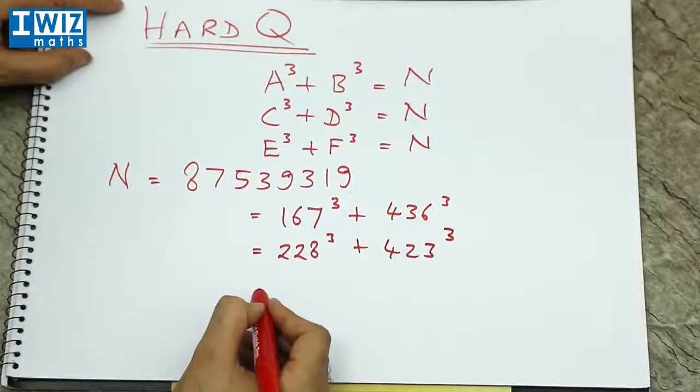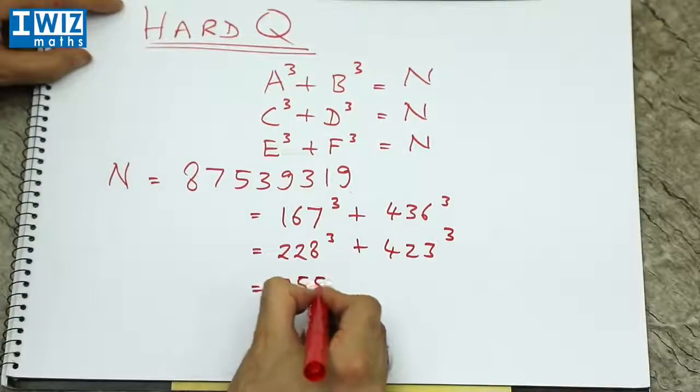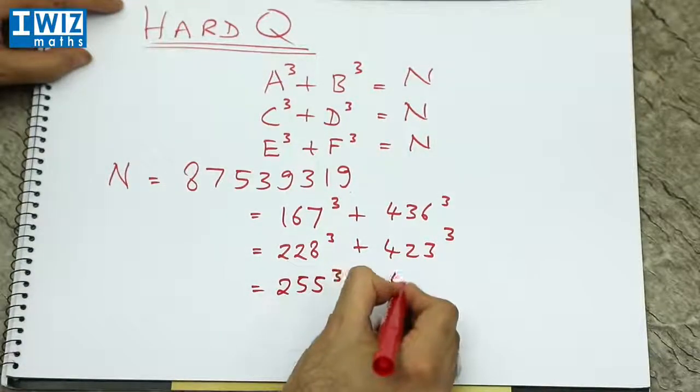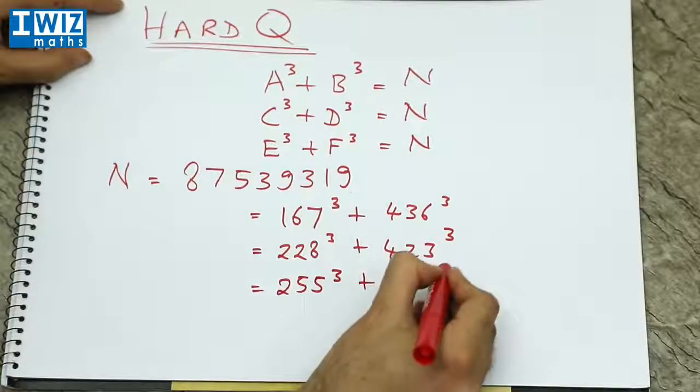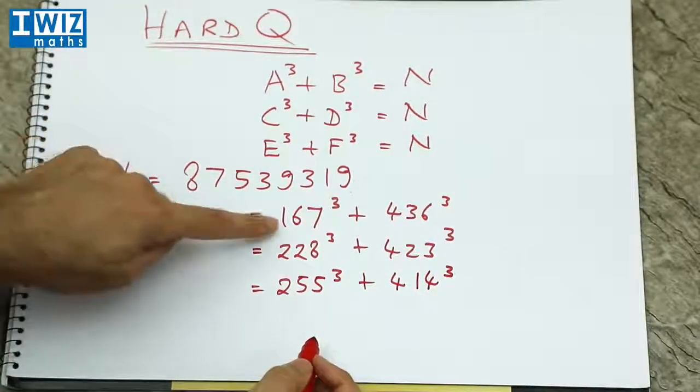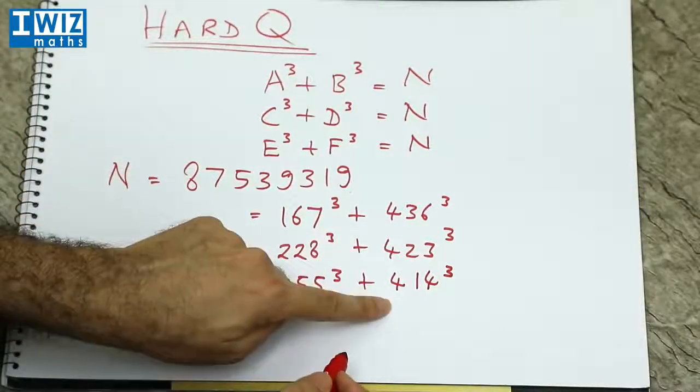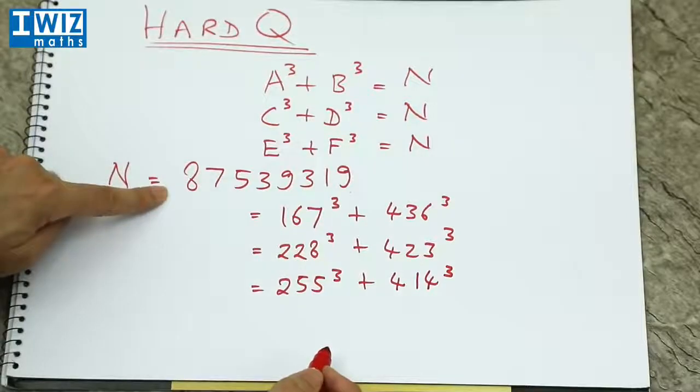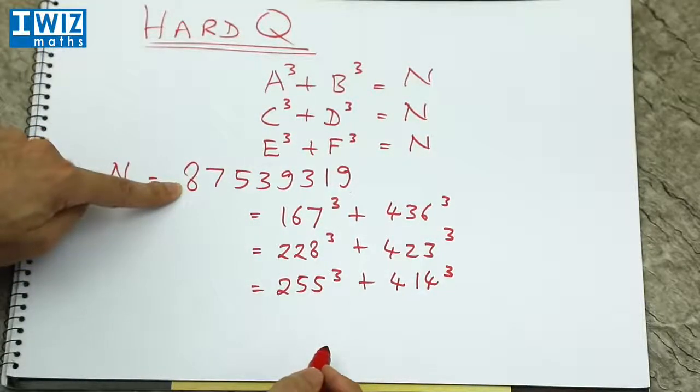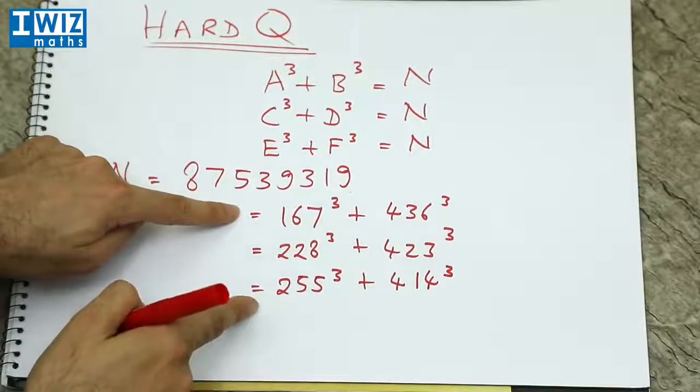It can also be written as 228 cubed plus 423 cubed. And finally, it can also be written as 255 cubed plus 414 cubed. So essentially those are your a, b, c, d, e, and f. And that's your number n. So that number can be written as the sum of two cubes in three different ways.